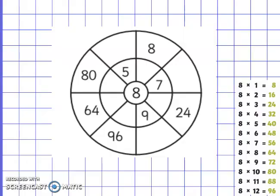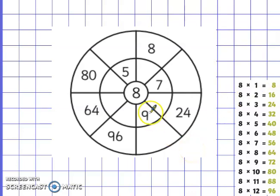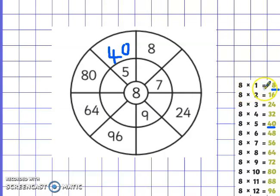Here we've got a multiplication wheel. To work out the answers, you need to times the middle number by the number on the first layer to give the answer at the end. Remember, if you've written your times table in your book it will help you, or you could use your times table grid from your pack. So we've got 8 times 5 is 40. 8 times 1 equals 8. 8 times 7 is 56. You see how this works?